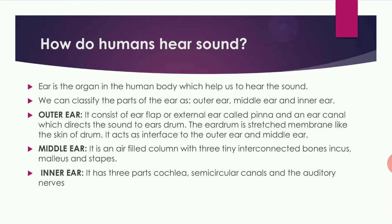The middle ear is an air-filled cavity with three tiny interconnected bones: the incus, malleus, and stapes. The inner ear has three parts: the cochlea, semicircular canals, and auditory nerves.